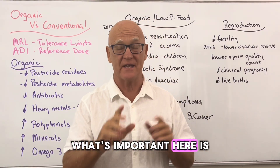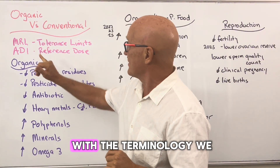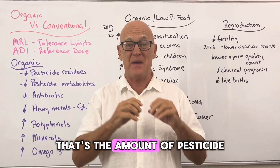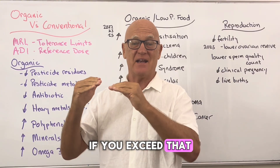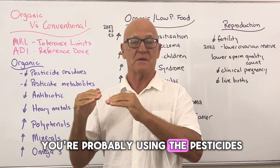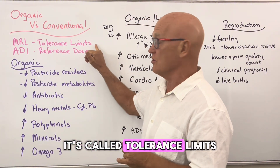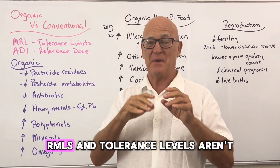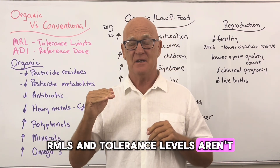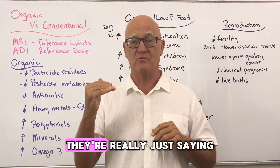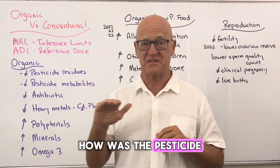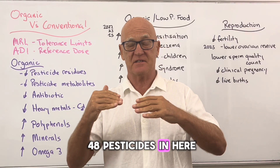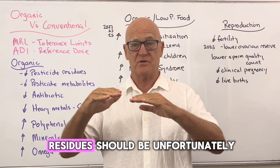What's important here is to clear up this issue, and it starts with terminology. In Australia we use something called the Maximum Residue Level (MRL) — that's the amount of pesticide residue on food; if you exceed it, you're probably using the pesticide incorrectly. In the US it's called tolerance limits. These MRLs and tolerance levels aren't really a message about whether you'll get sick — they indicate whether the pesticide was used according to good agricultural practice.